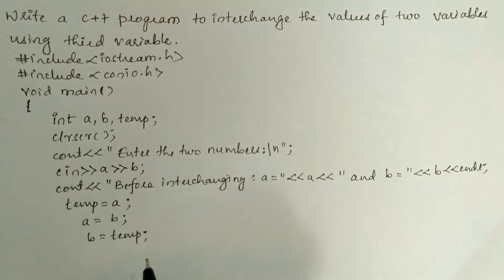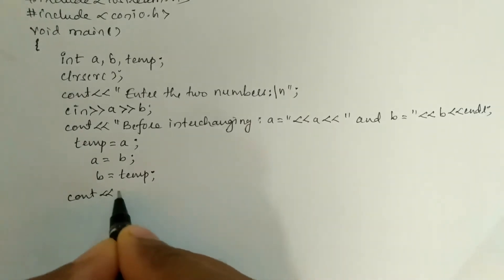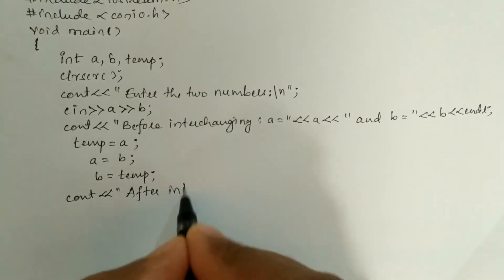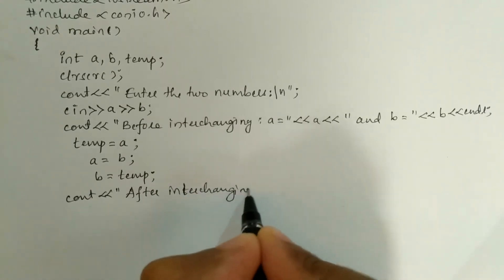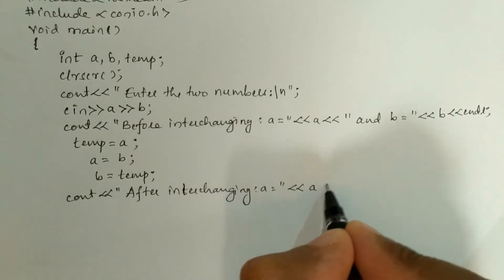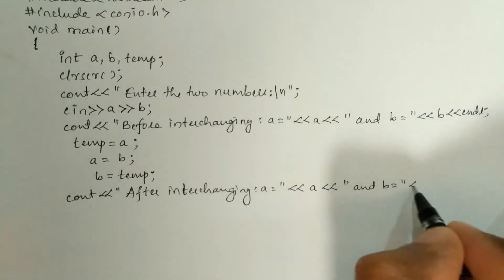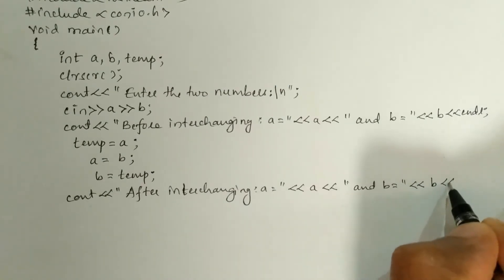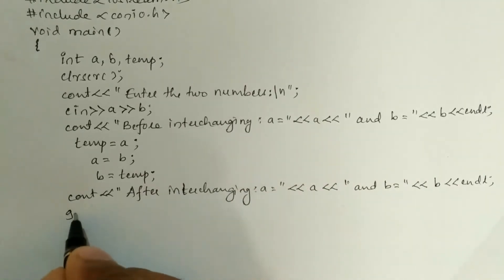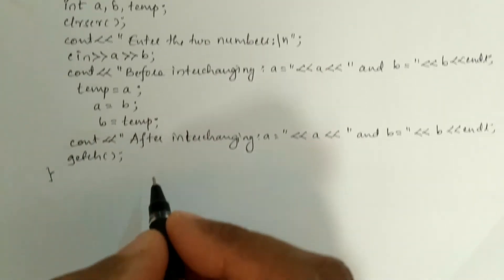Then a is equated with value b, and then b is equated with the temporary variable temp. After this, we write a cout statement with the stream insertion operator — in double quotation marks we write "after interchanging a is equal to", then the variable a, then "and b is equal to", then variable b, then endl and semicolon. Finally we write the getch() function and the curly closing brace for the main function.